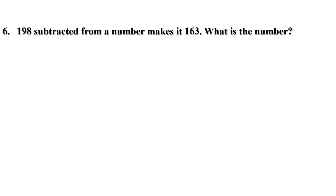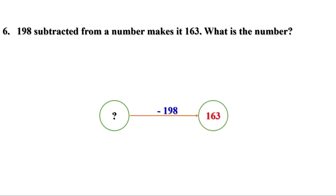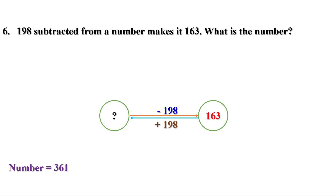Sixth problem: 198 subtracted from a number makes it 163. What is the number? We don't know the number, but when 198 is subtracted, it is 163. We need the number before subtracting 198 — do the reverse: add 198 to 163. For mental calculation, add 200 to 163 to get 363. Since we added 200 instead of 198, we get two more than needed, so subtract 2. We get 361. That means the number is 361.